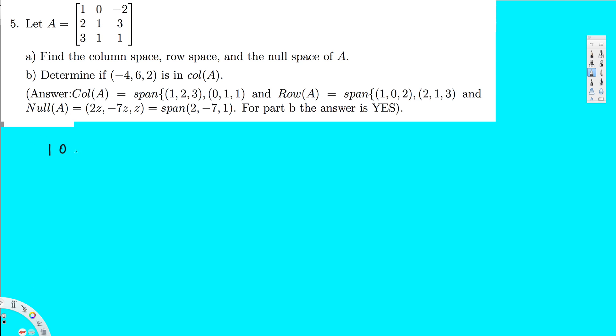So the matrix is: 1, 0, minus 2; 2, 1, 3; 3, 1, 1. And I'm going to do Gauss-Jordan for this one.